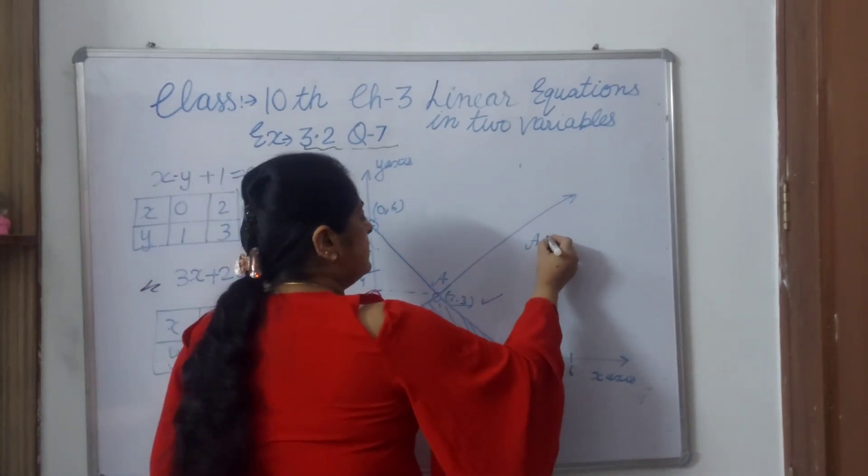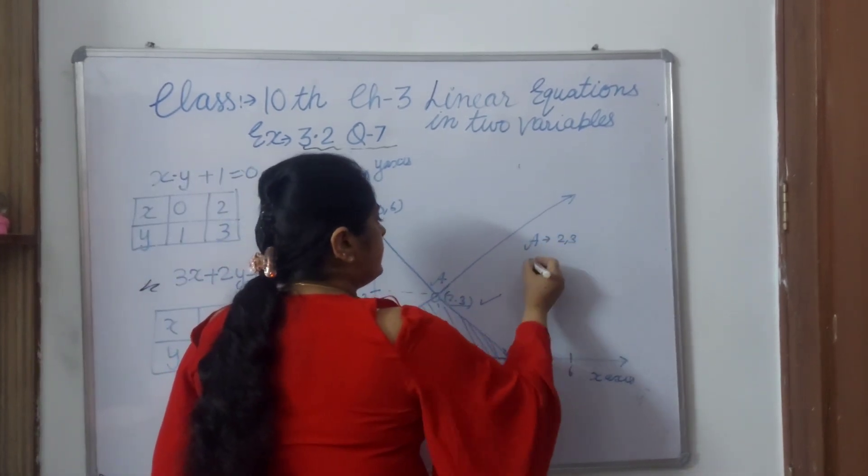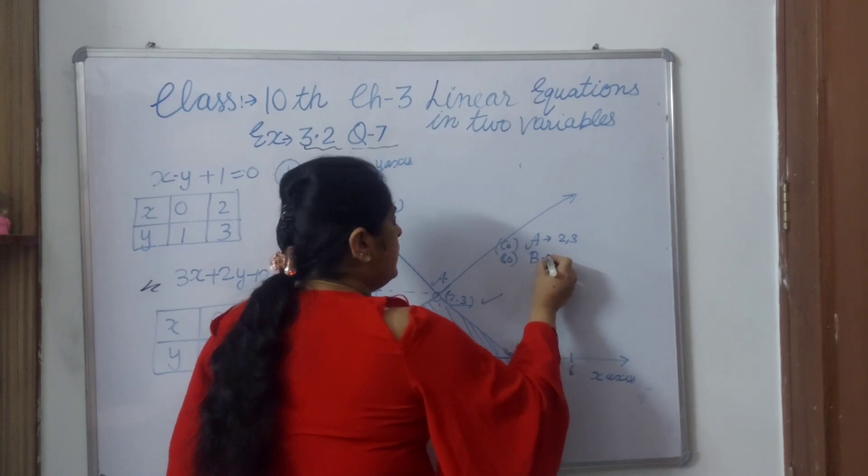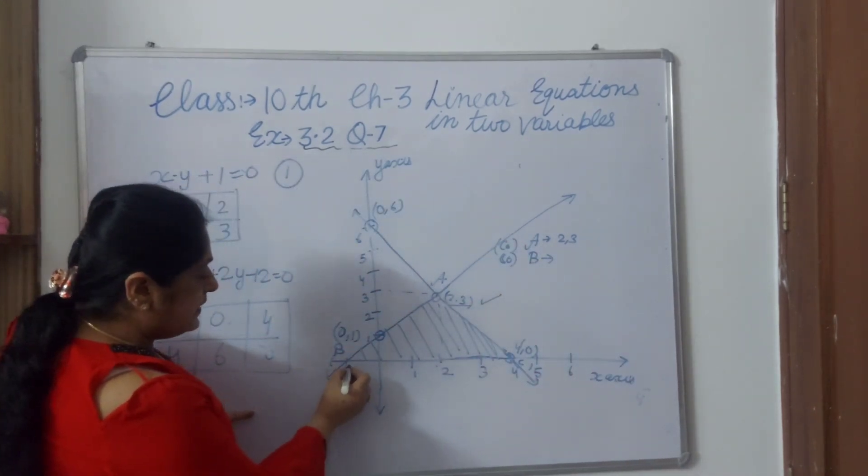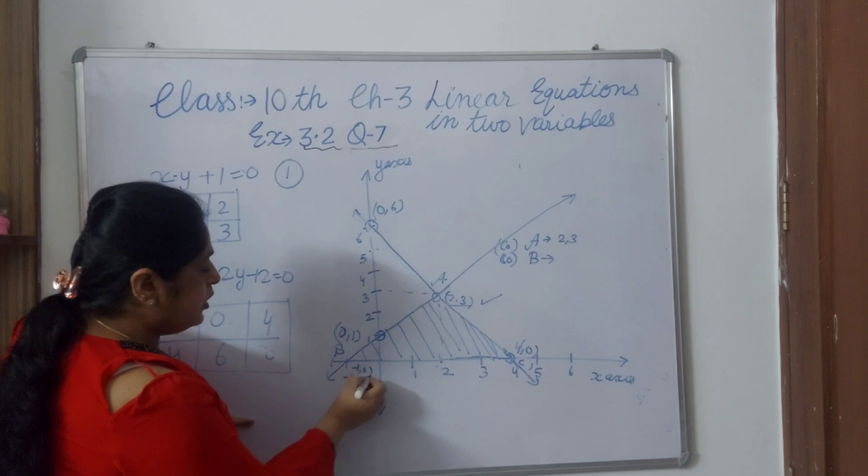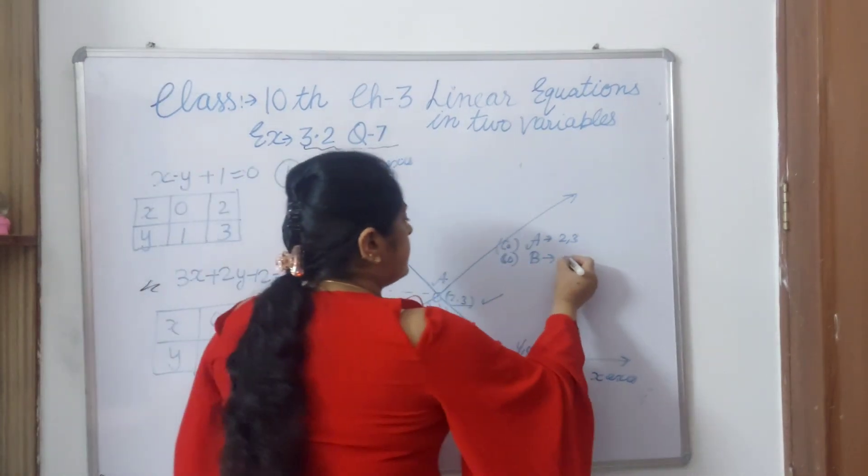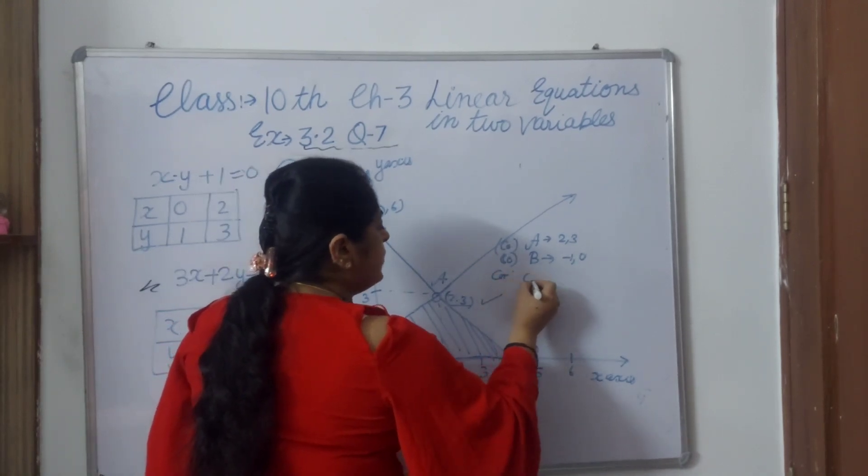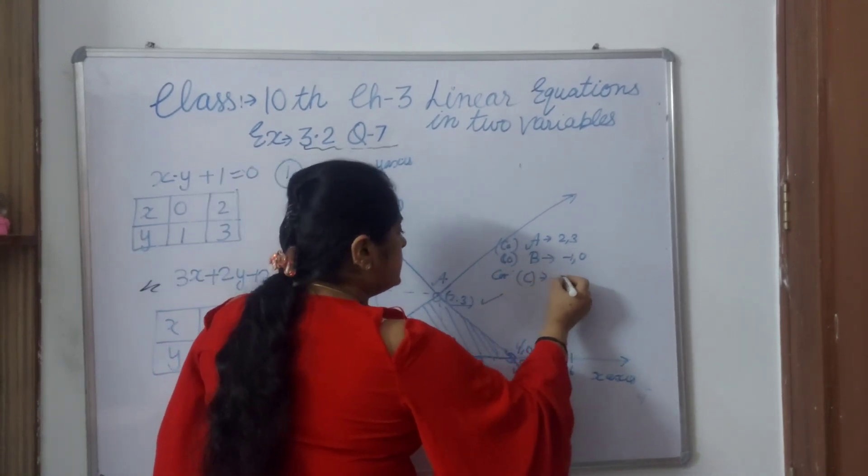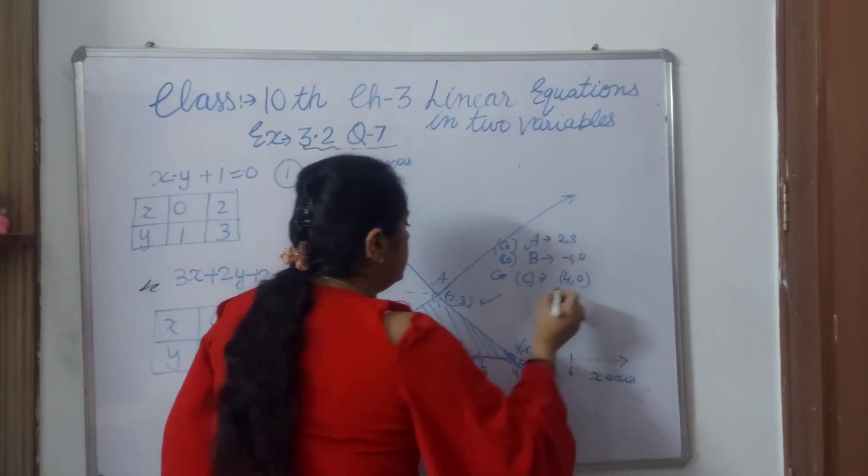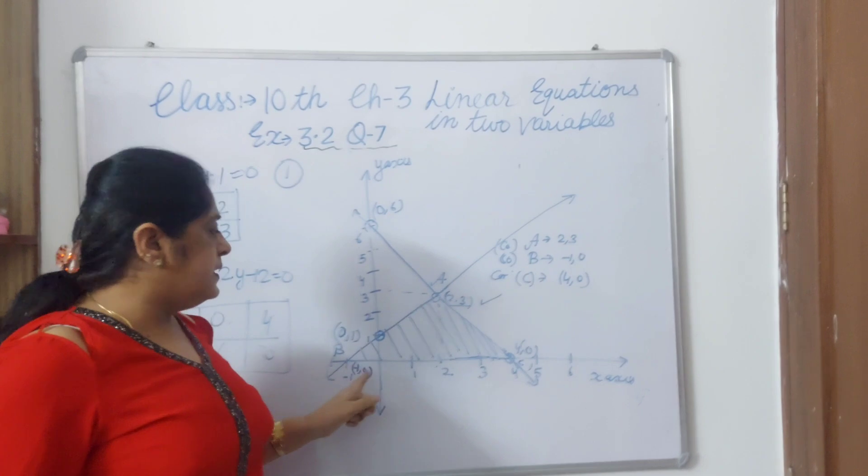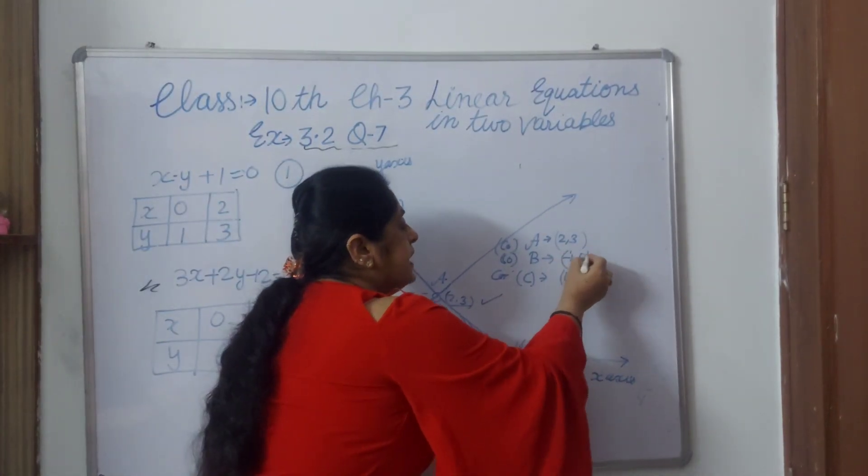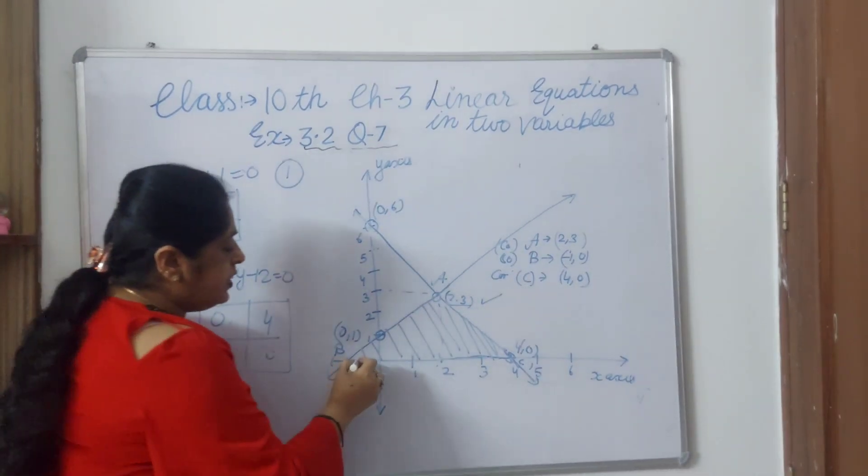We have to shade this and we have to write the coordinates. A point coordinates are 2 and 3, and coordinates of B point: here, minus 1 x value and y value 0, minus 1 and 0. And this C point, coordinate of C point is 4, 0. These are three points A, B, C, and I have written the coordinates. Coordinates means x and y values, and we have to shade this.